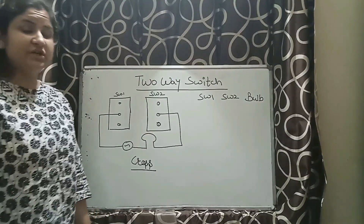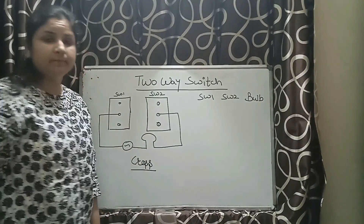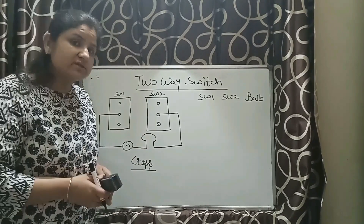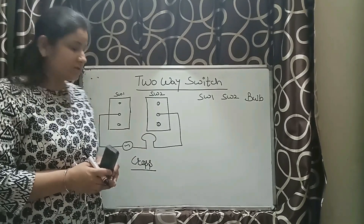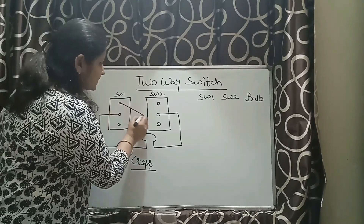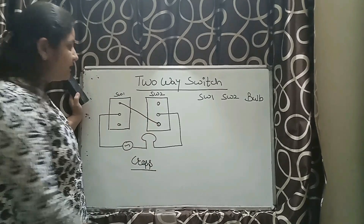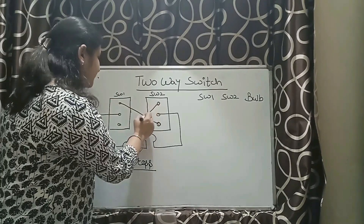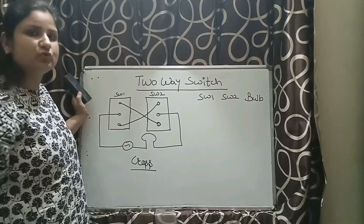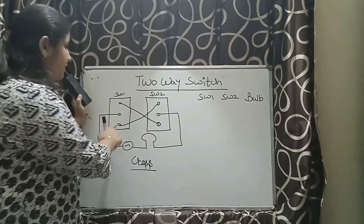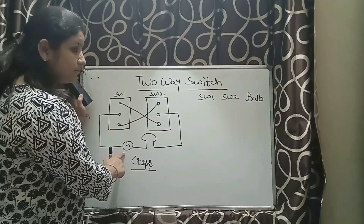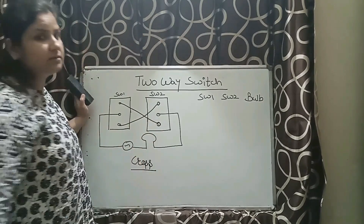The second type of connection is cross connection. In the case of cross connection, the first terminal is connected with the last. Similarly, the first terminal of the second switch is also connected with the last terminal of switch number 1. Whereas the middle terminals are connected with the input supply and the device.